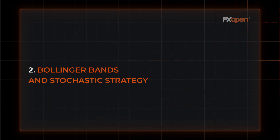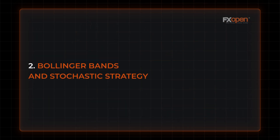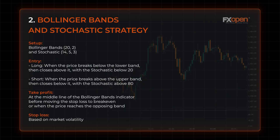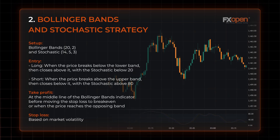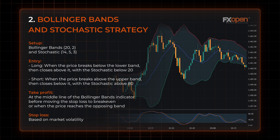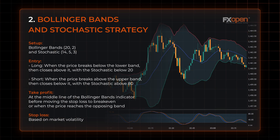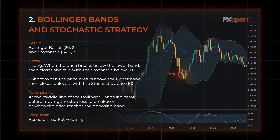The Bollinger Bands and Stochastic Strategy uses the Bollinger Bands and Stochastic indicators to find entries in areas where the price is likely to reverse. Traders may go long when the price breaks below the lower band then closes above it with Stochastic below 20.